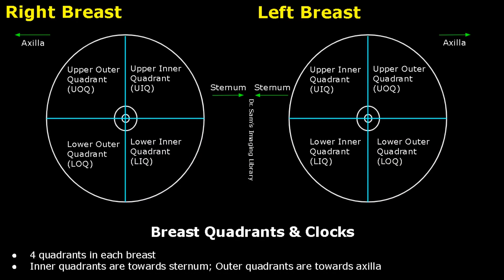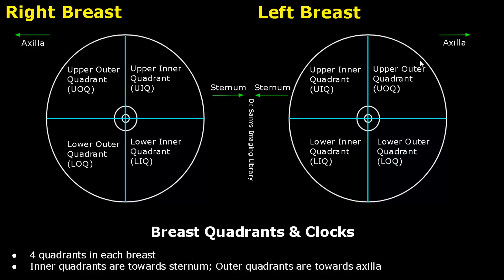Hello everyone, this is Dr. Sam and this video is about breast ultrasound probe positioning. These are schematic diagrams of the right and left breast. This circle represents the entire breast, this second circle is the areola, and the third smallest circle is the nipple.